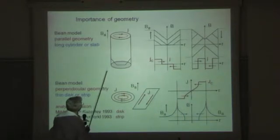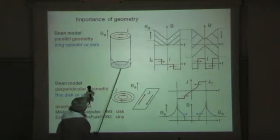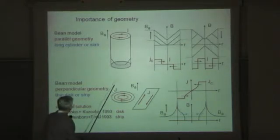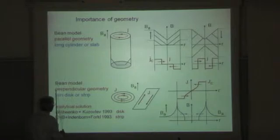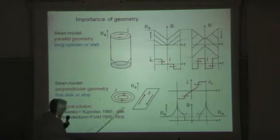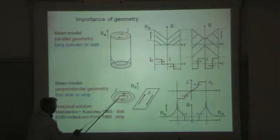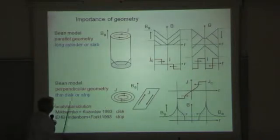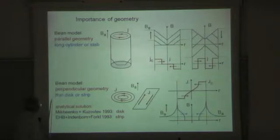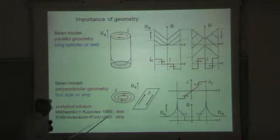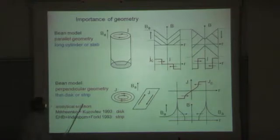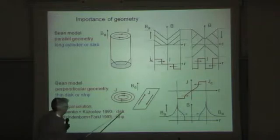Now, much more important are situations where you do not have a very long cylinder. There is no infinite cylinder and no infinite slab. And the Bean model for the opposite limit, namely very thin discs and thin strips, so-called perpendicular geometry, whereas this is parallel or longitudinal geometry. This has been solved only in 1993, almost at the same time by Zeldov and Kugel from Donetsk in Ukraine and by Misha Indenbom and myself in Stuttgart. So it was published at a distance of two weeks.